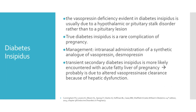Next is diabetes insipidus. The vasopressin deficiency evident in diabetes insipidus is usually due to a hypothalamic or pituitary stalk disorder rather than a pituitary lesion. True diabetes insipidus is a rare complication of pregnancy, and management is intranasal administration of a synthetic analog of vasopressin, or desmopressin. Transient secondary diabetes insipidus is more likely encountered with acute fatty liver of pregnancy, due to altered vasopressin clearance because of hepatic dysfunction.